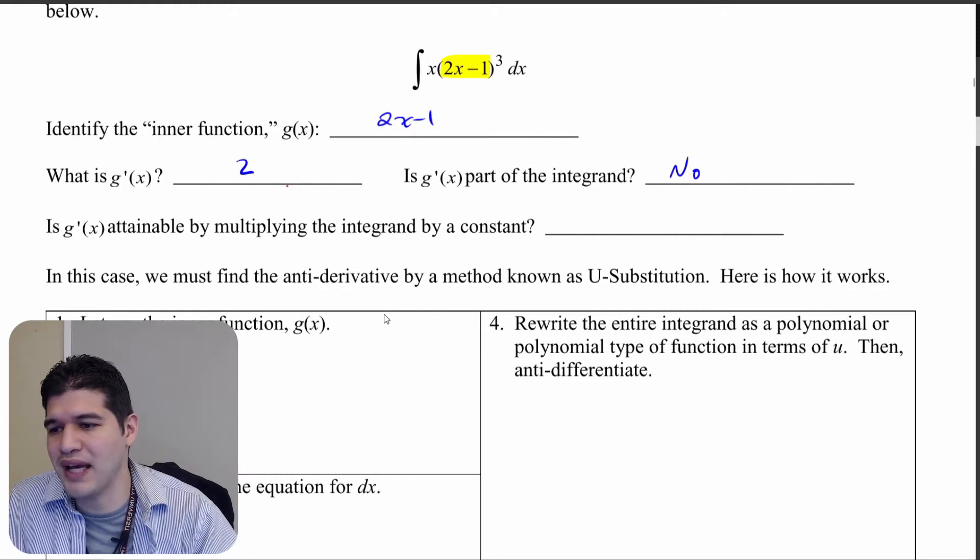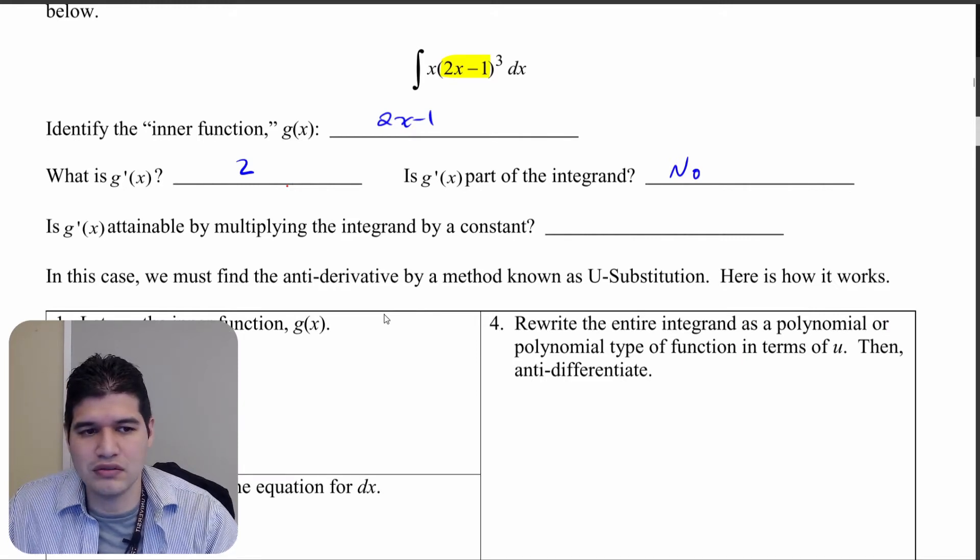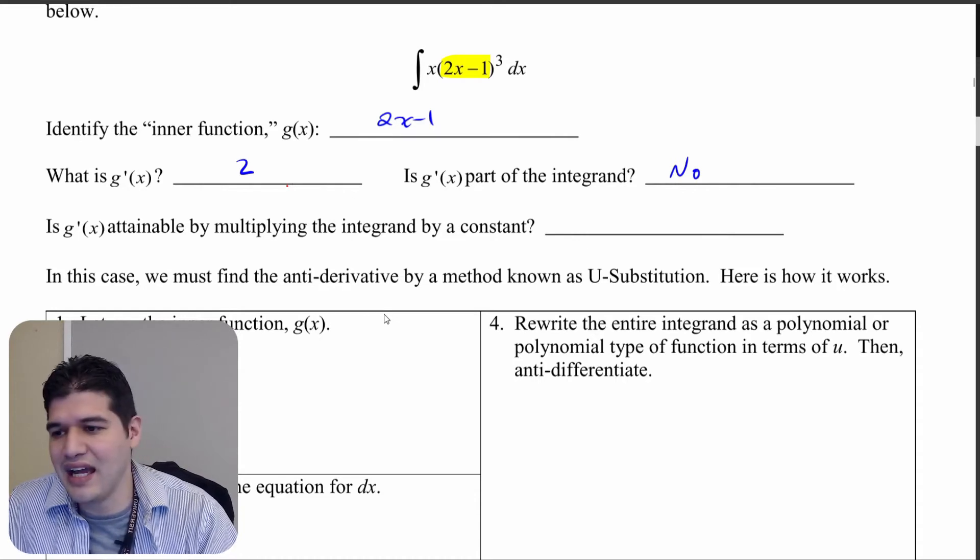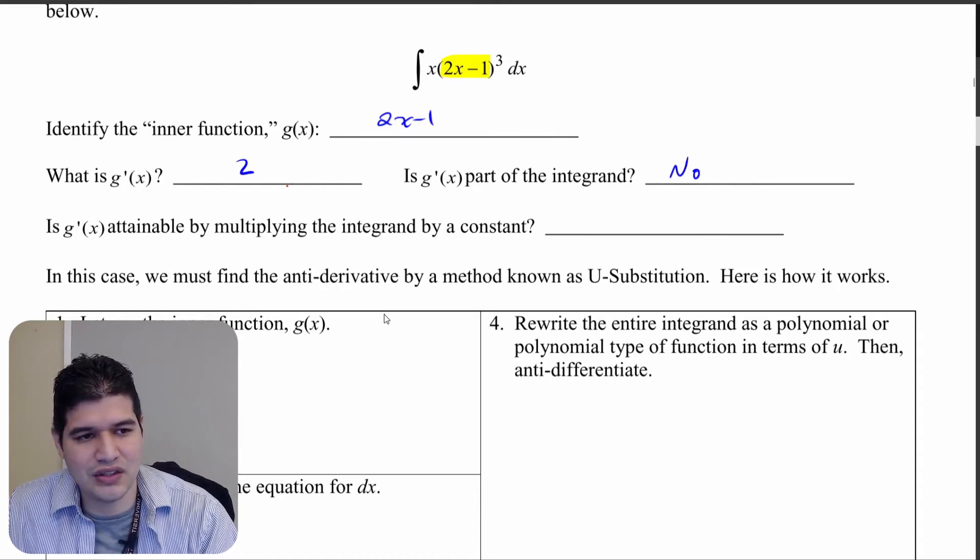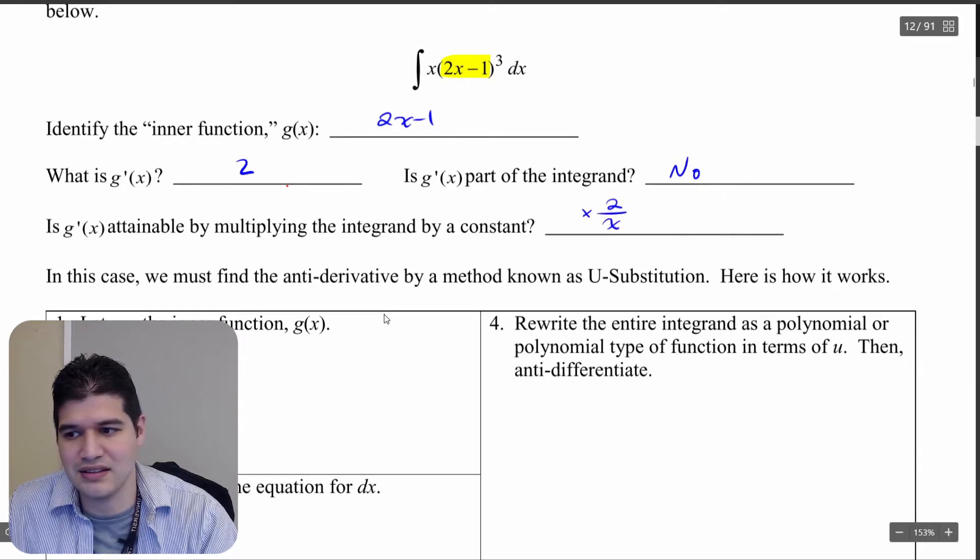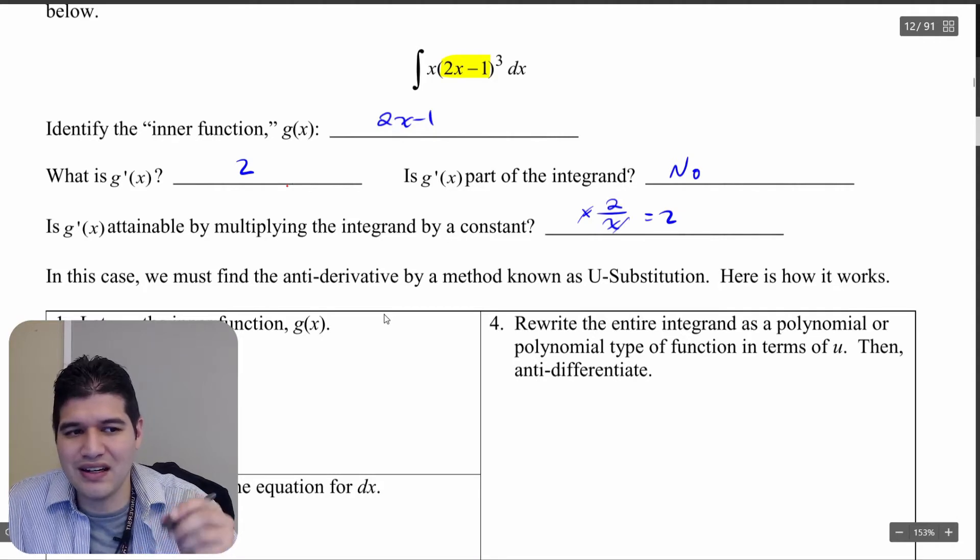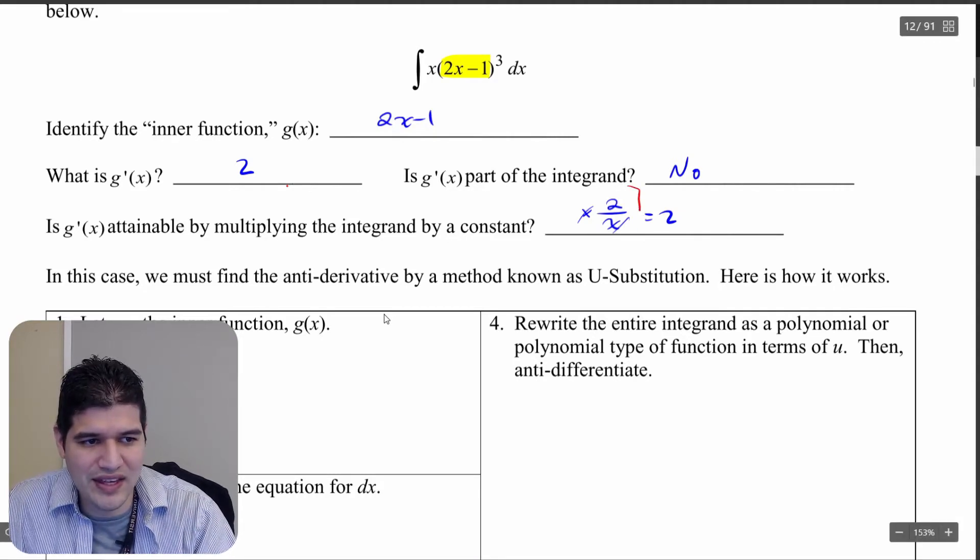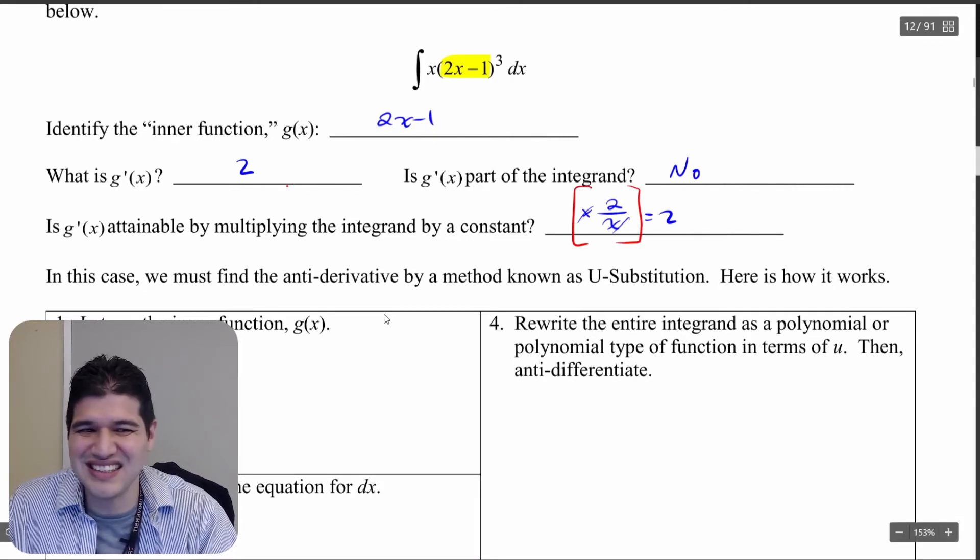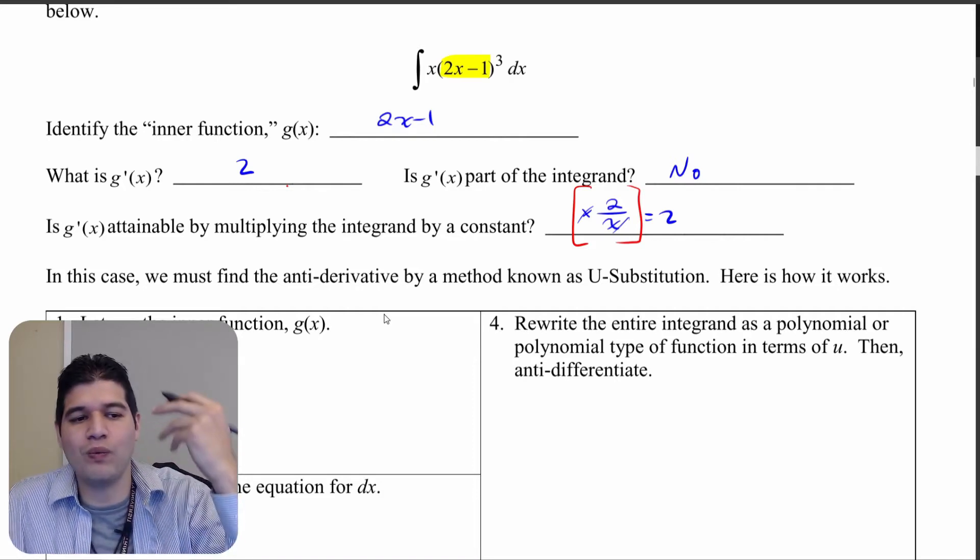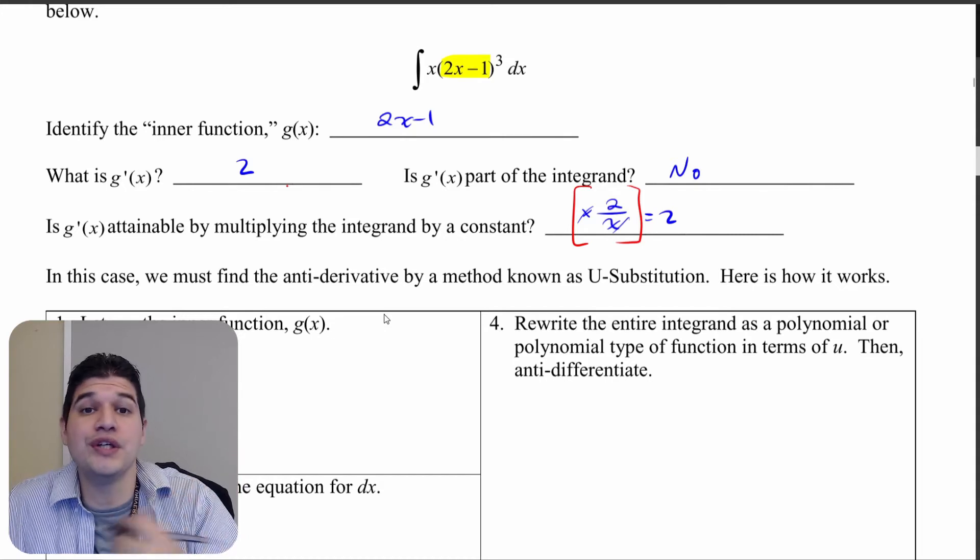Can we multiply by a constant? Well, let's see what we can get to get 2. Well, because I have the x out there, so if I had x out there and I divided by the x, that would get me 2, great, because those would divide out. But this right here, this is not a constant. Multiplying by 2 over x is not a constant. So this is where we use a method called u substitution.